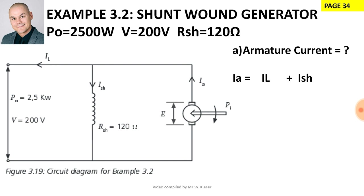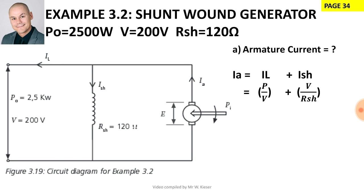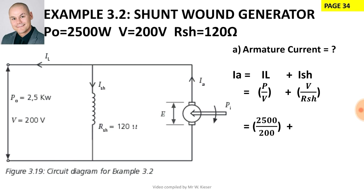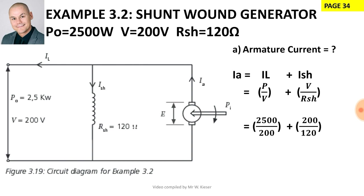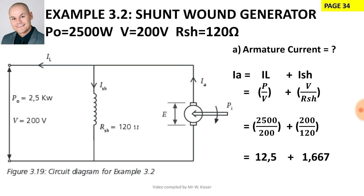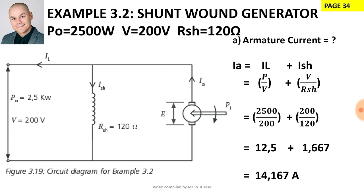Example 3.2: a shunt-wound generator delivers 2.5 kilowatts of power at a terminal voltage of 200 volts. The shunt field resistance is 120 ohms. Part A: calculate the armature current, which is a combination of supply current and shunt current. Supply current = power / voltage = 2500 / 200 = 12.5 A. Shunt current = terminal voltage / shunt resistance = 200 / 120 = 1.667 A. Armature current = 12.5 + 1.667 = 14.167 A.